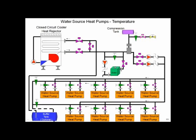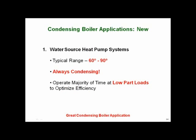Every water source heat pump job you know of should be changed over to condensing boilers immediately. Give me 60 degree return water to a condensing boiler — I'll be 99% efficient. Give me low load modulating condensing boilers — now I'll be 99% efficient. A condensing boiler can pay off on a water source heat pump job so fast you won't believe it. Paybacks of two to three years or less, and you eliminate the maintenance problems on top of that.